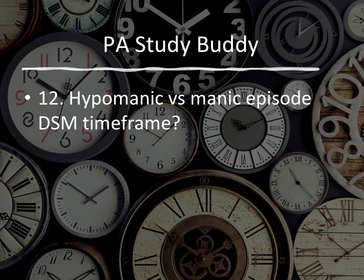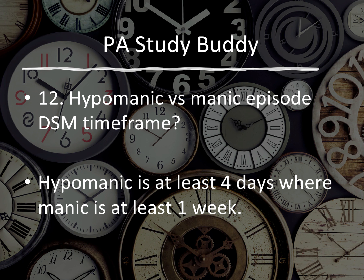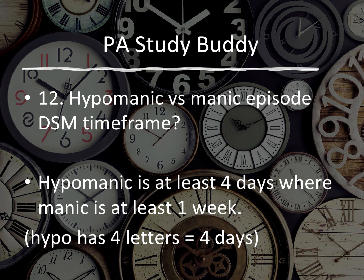Question twelve: hypomanic versus manic episodes — DSM timeframes. Knowing the difference between these two will definitely be tested throughout PA education. Hypomanic is at least four days, where manic is at least one week. So anything longer than one week, think manic episode; less than a week but more than four days, that's hypomanic. Memory trick: 'hypo' has four letters — four days.